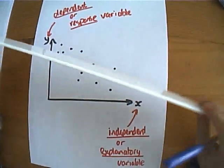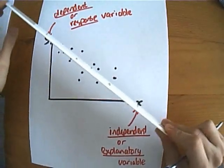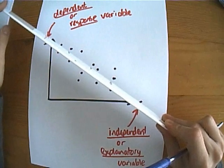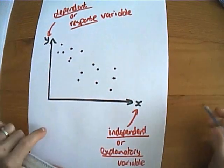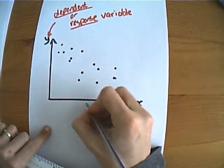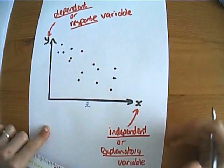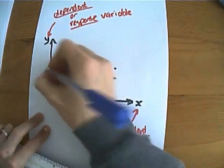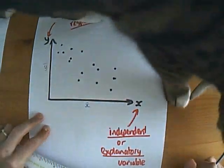Then when you got to GCSE statistics, those of you that did it, we introduced you to the idea of putting the line of best fit through what we called the mean point. What you'd do is you'd find x bar, you'd find the mean x value and you'd find the mean y value.